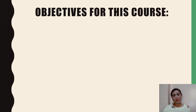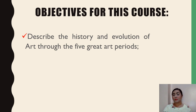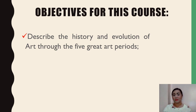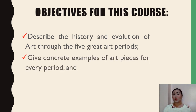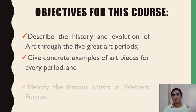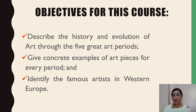We have three objectives for this chapter. Number one, for us to be able to describe the history and evolution of art through the five great art periods. Second, for us to be able to give concrete examples of art pieces for every period. And our last objective, to be able to identify the famous artists of Western Europe.